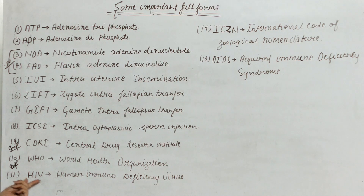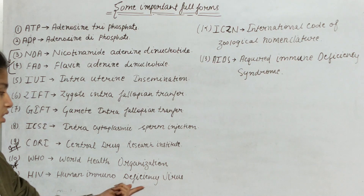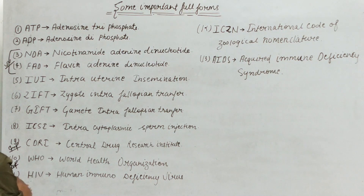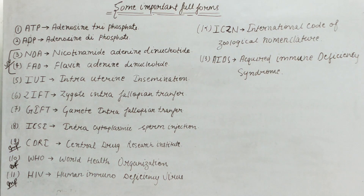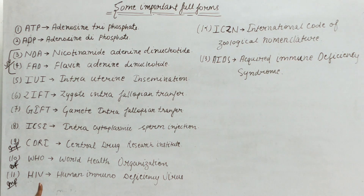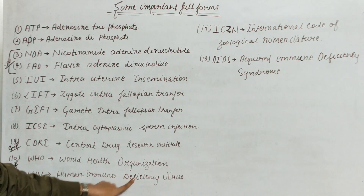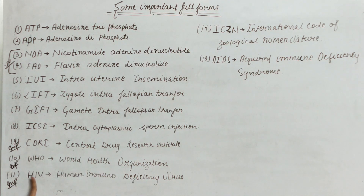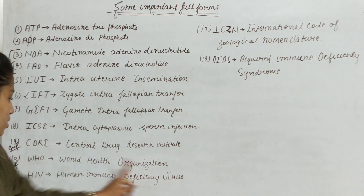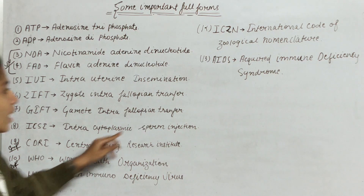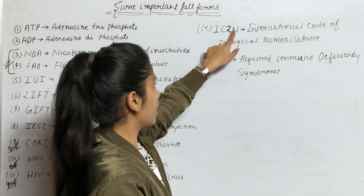Next, the 11th number is HIV — Human Immuno Deficiency Virus. H from Human, I from Immuno, D from Deficiency, and V from Virus.